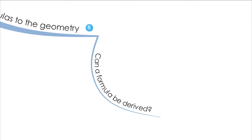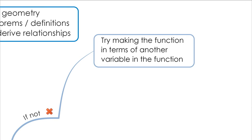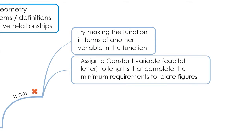Based off what you have, can a formula be derived? If you can't, there are a couple of things to check. First, make sure you're making the function in terms of the correct variable. Sometimes you're not given all the information you need, but you're given some that helps you derive the rest — that's why you assign a constant variable, such as a capital letter, to lengths that complete the minimum requirements to relate figures.